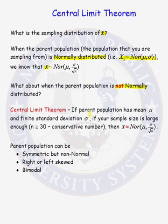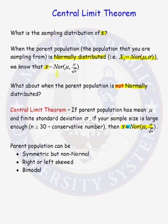If the parent population has mean mu, it has finite standard deviation sigma, and if our sample size is large enough, then we know that the sampling distribution of x-bar, our sample mean, is approximately normally distributed with mean mu and standard deviation sigma over the square root of n. When the parent population is normal, the sampling distribution of x-bar is exactly normal. If the conditions for the Central Limit Theorem apply, then the sampling distribution of x-bar will be approximately normal.